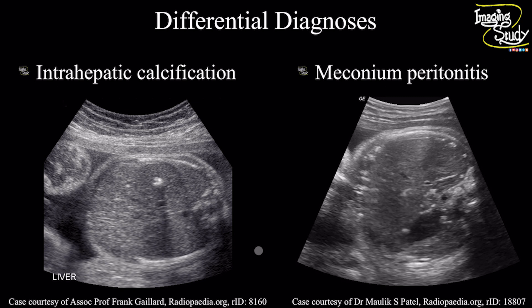Two common differential diagnoses of this case are intrahepatic calcification and meconium peritonitis. In intrahepatic calcification, you can't see the hypoechoic crescent line adjacent to hyper-echogenic foci. Usually, hepatic calcifications are from maternal infection like toxoplasmosis, cytomegalovirus infection, or varicella infection, or even from intrahepatic tumor calcifications. In case of meconium peritonitis, there will be calcifications on peritoneal surfaces, which might be from fetal bowel perforation, often accompanied with different findings like ascites, dilated or echogenic bowel.